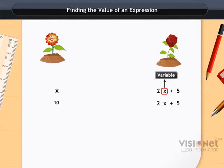We get 2 into 10 plus 5, which is equal to 20 plus 5 or 25. So the number of roses is 25.